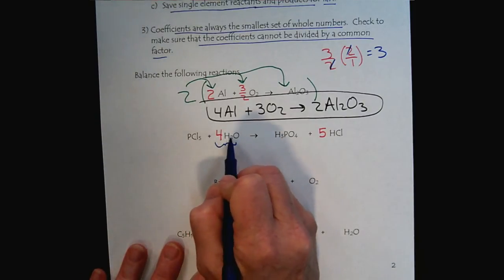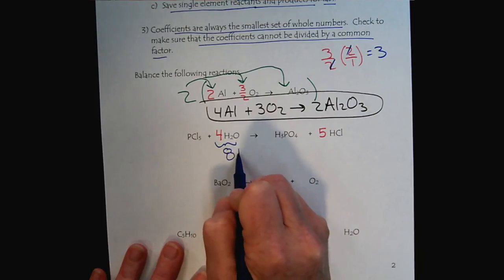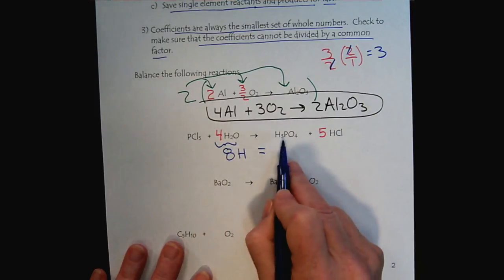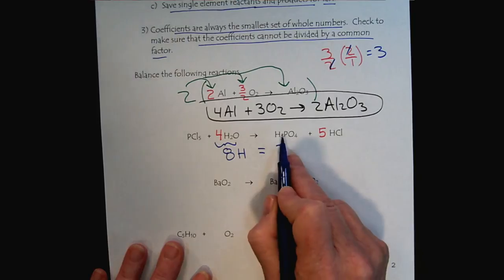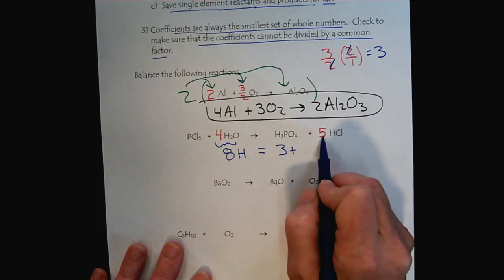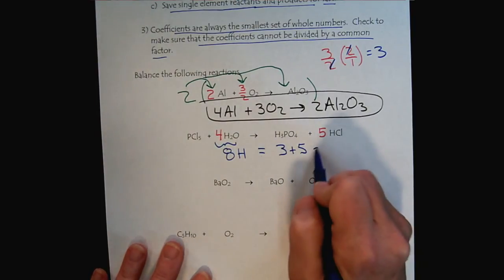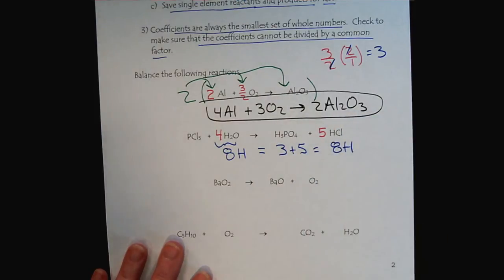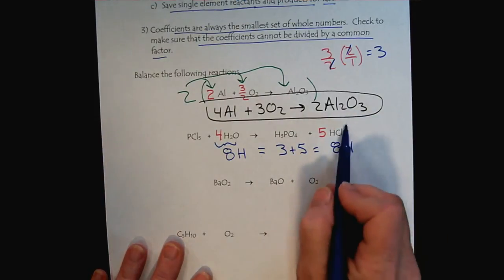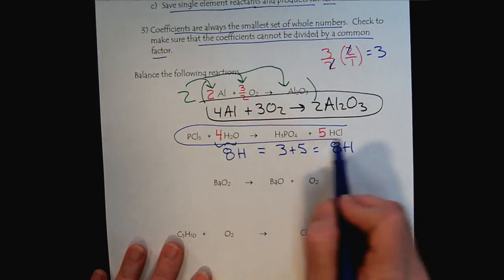Let's look at those hydrogens and see what's going on. On the left, four times two, we have eight hydrogens. And then we have three hydrogens from the phosphoric acid and five hydrogens from the hydrochloric. And so, voila, our reaction is balanced.